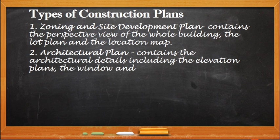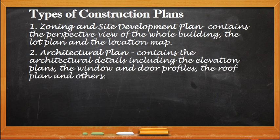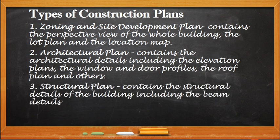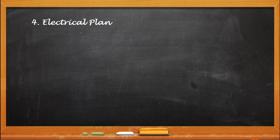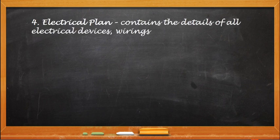Then we have the architectural plan, which will contain the architectural details including the elevation plans, the window and door profiles, the roof plan, and others. Then the structural plan will contain the structural details of the building including the beam details, walling details, truss and roof framework, and the computation of supports and footings.